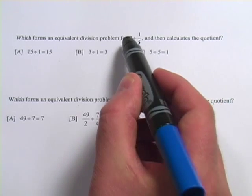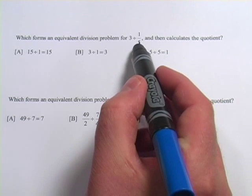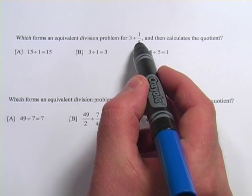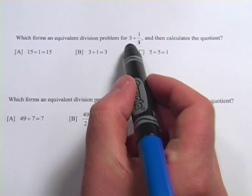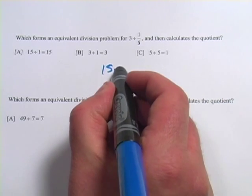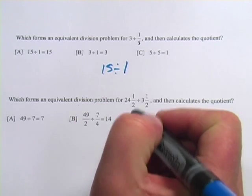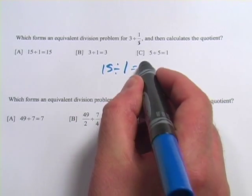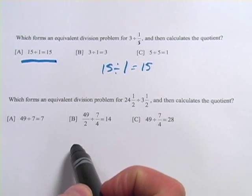If I multiply both of these pieces by something, it's still going to be an equivalent division problem. And when I see a 5 on the bottom of the fraction, that tells me I might want to multiply everything by 5. So if I do that, 3 times 5 is 15, and 1/5 times 5 is actually 1. So 15 divided by 1 would equal 15, and lo and behold, that's our answer.